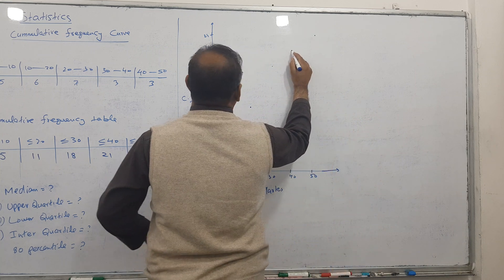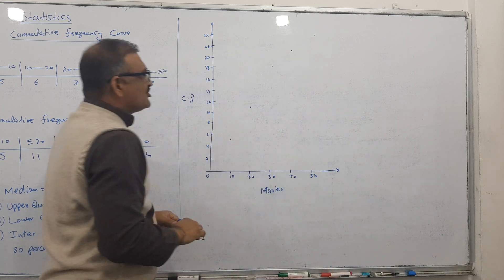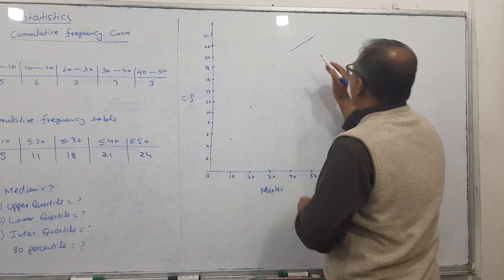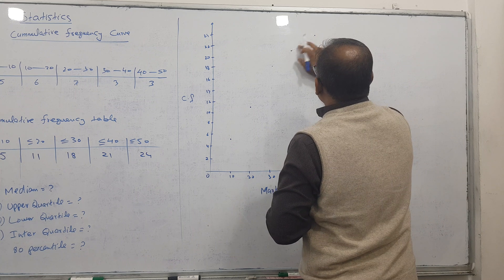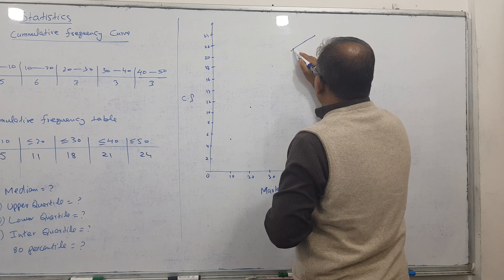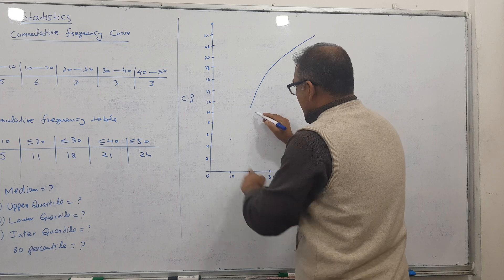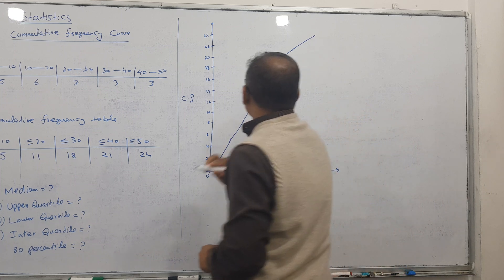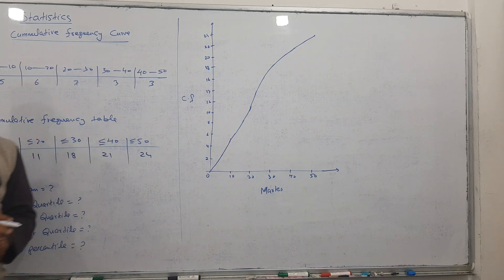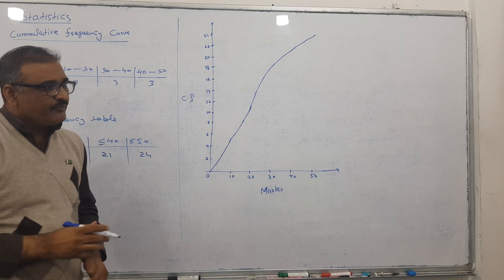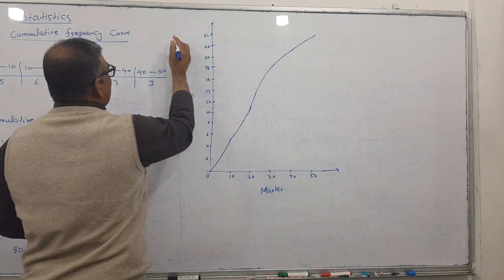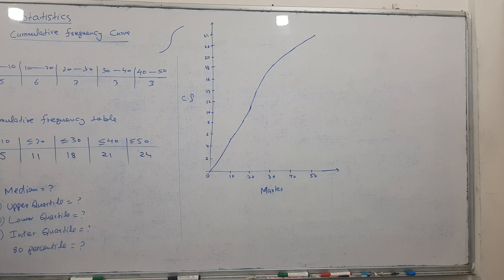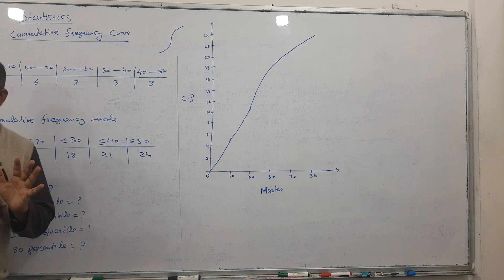Now we join the points. Don't join them directly — that's wrong. The right way is to draw a smooth curve, joining the points this way and this way. Always draw a smooth curve and don't use a scale. The graph always has approximately an S-shape — not exactly, but approximately.